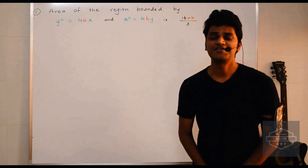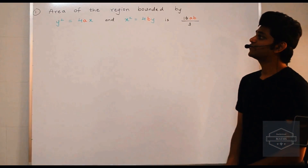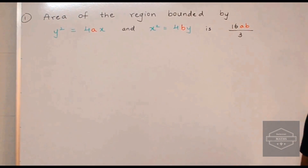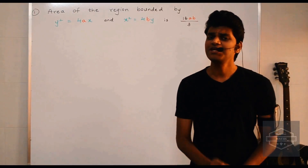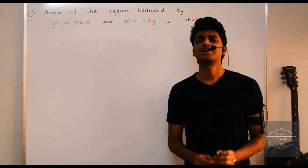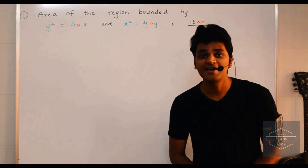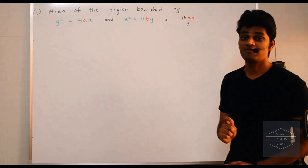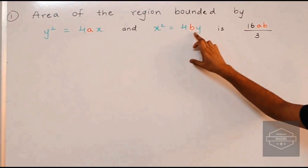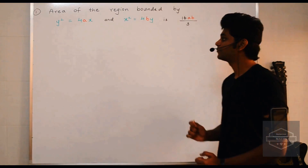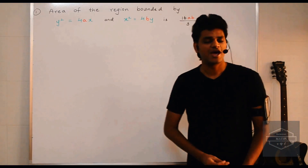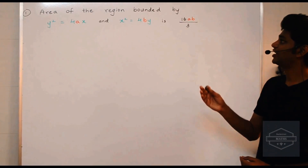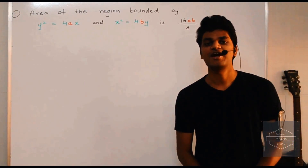The first shortcut says: the area of the region lying between two parabolas y² = 4ax and x² = 4by is given by 16ab/3. Here, a and b are the constants we can find from the two equations. We just find the values of a and b, put them into the formula 16ab/3, and we get the answer in a few seconds.